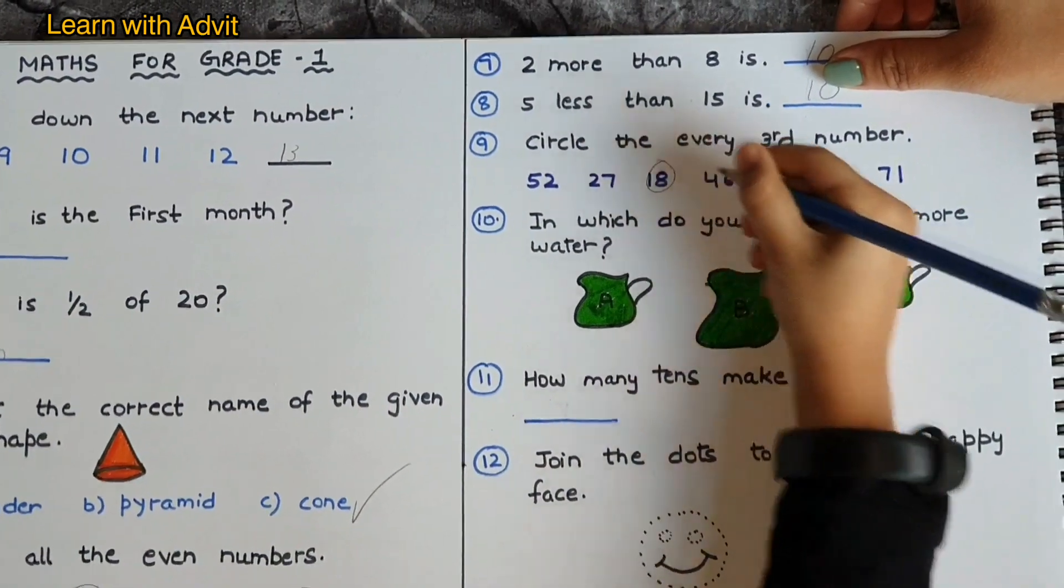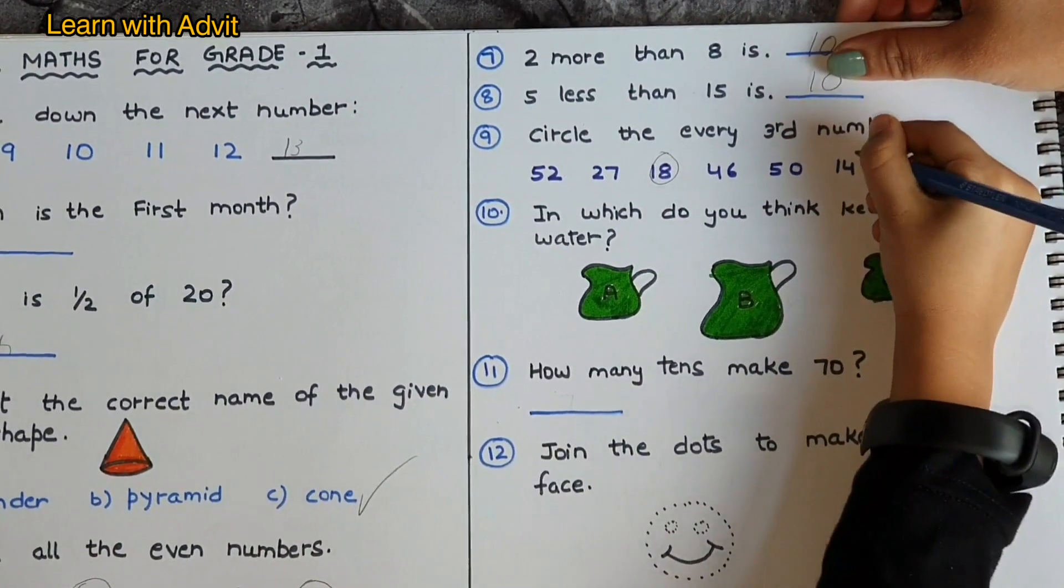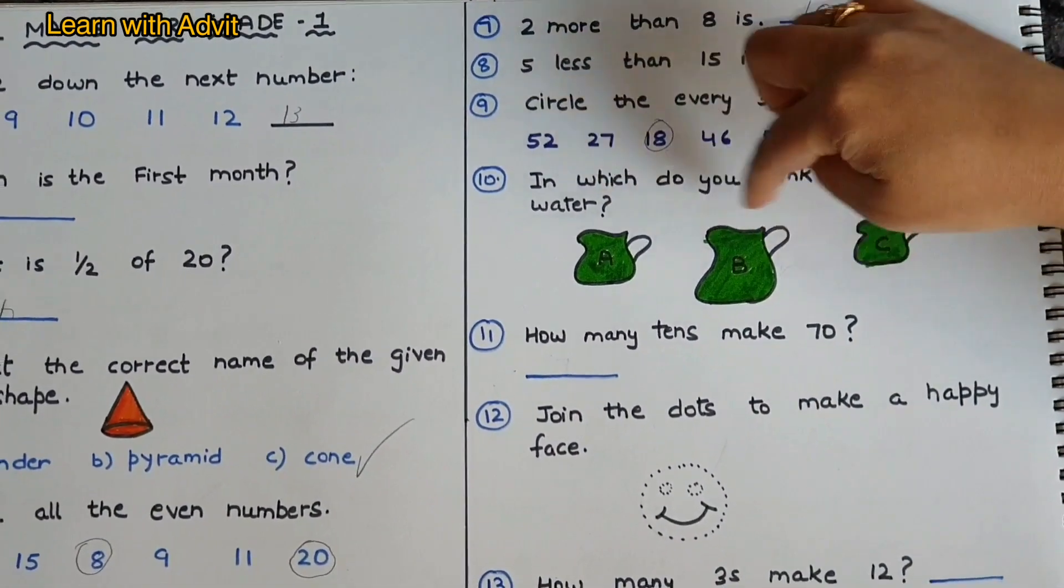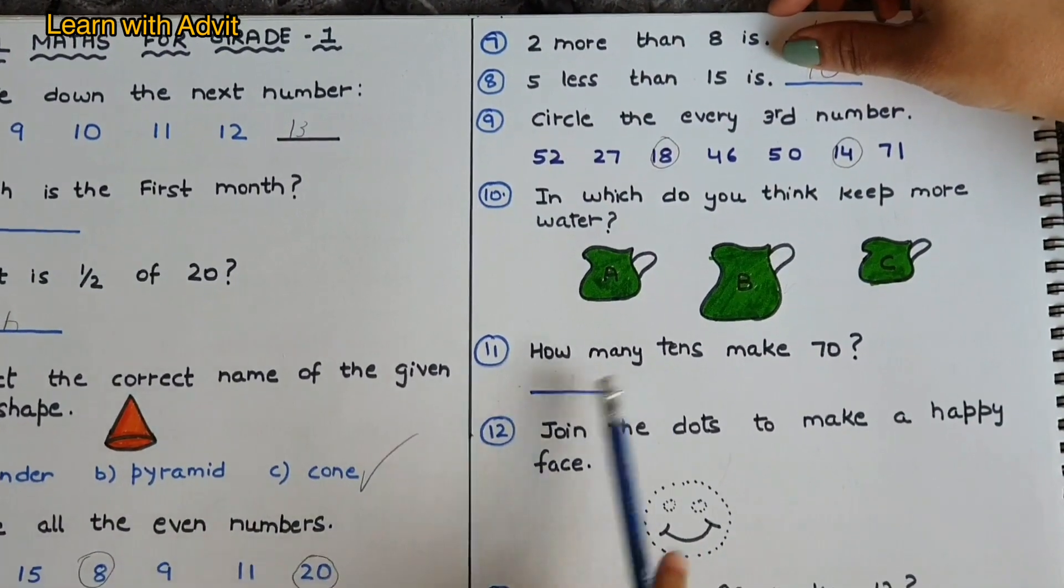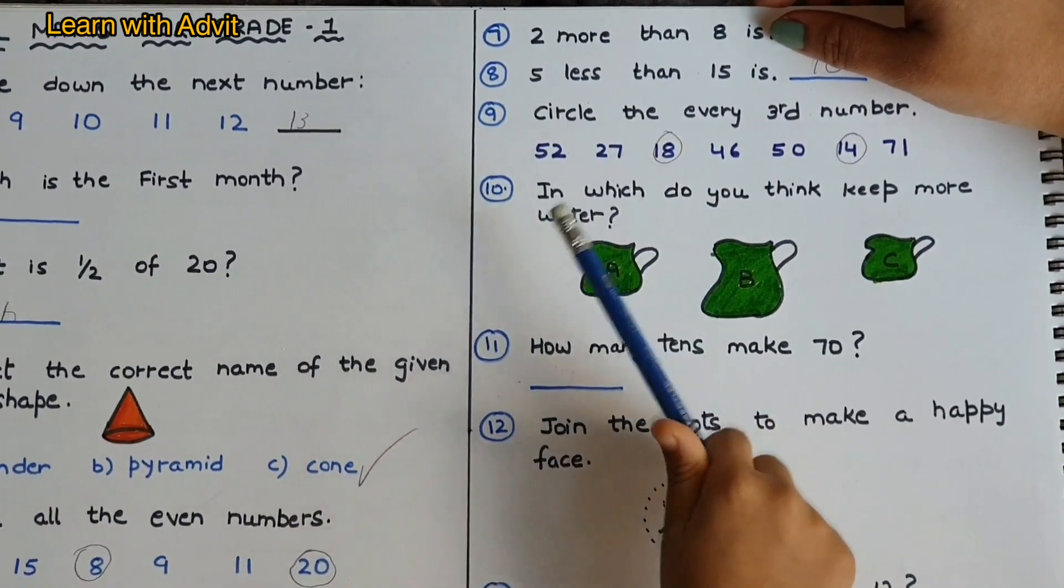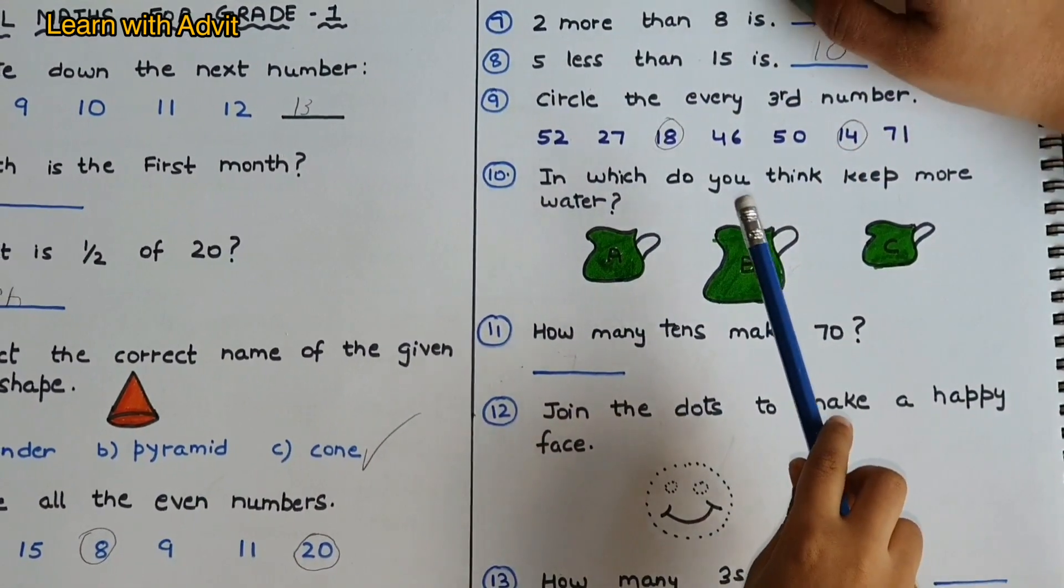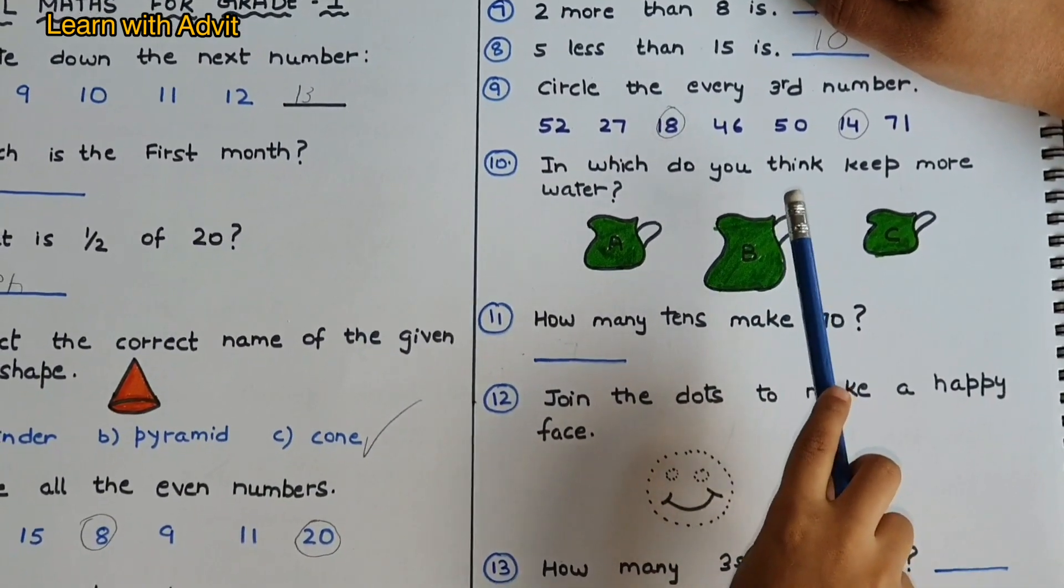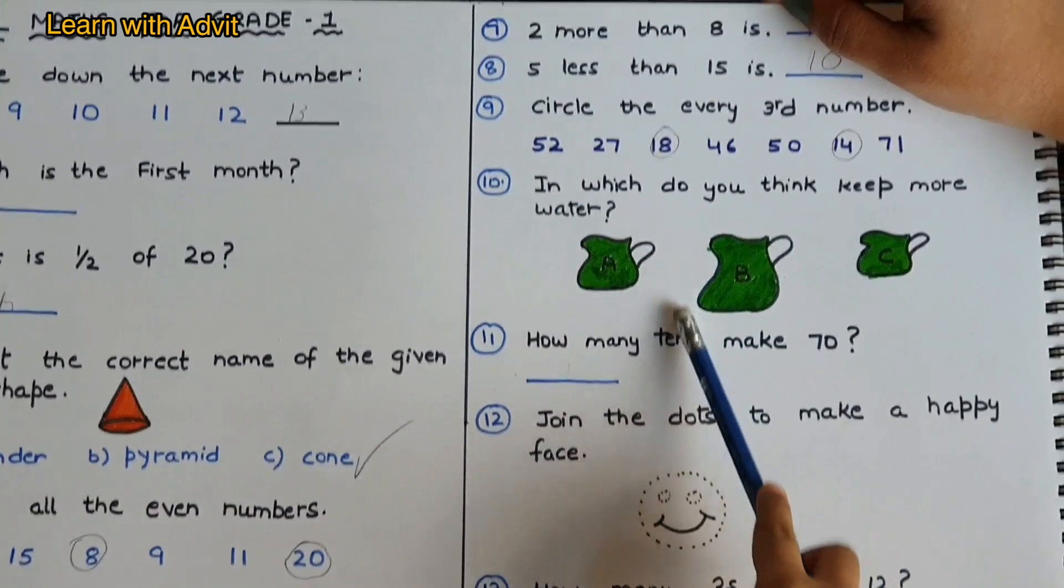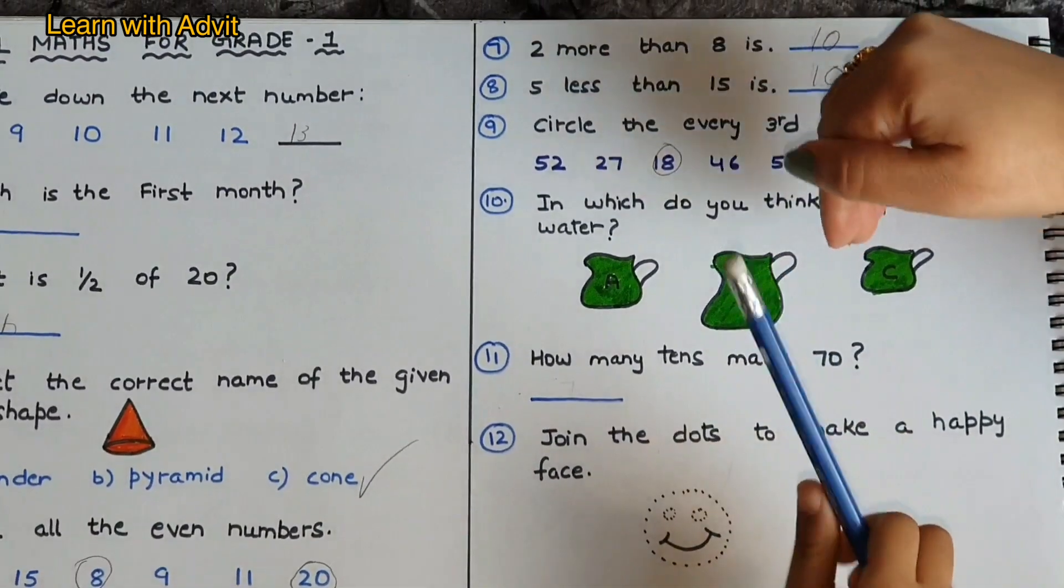Circle every third number. It is ordinal number which shows the position of numbers. In which jug do you think you can pour more water: A, B, or C? A is medium so we cannot keep much. Which is the bigger one? B is the best, so we can get more water, take it.